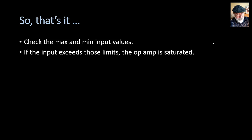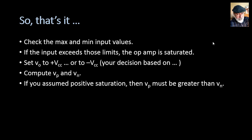Then, if the input exceeds those limits, we know that the op-amp is saturated. Set the output to the closest rail, compute Vp and Vn, and check if you are on the correct side of saturation. If you're not, set the output on the other rail and repeat.